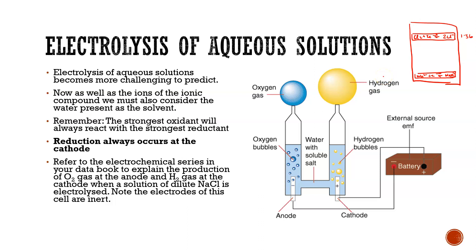We can't place sodium metal into water without it reacting. So in sodium chloride solution we have Na⁺ and Cl⁻ present, but we also have water. Looking at the electrochemical series there are two equations for water. One comes in just under chlorine — the oxygen reaction from fuel cells: O₂ + 4H⁺ + 4e⁻ → H₂O.